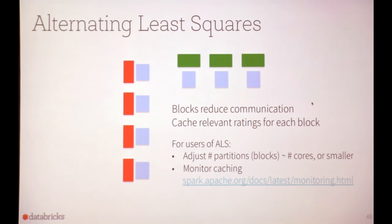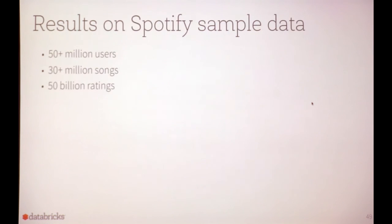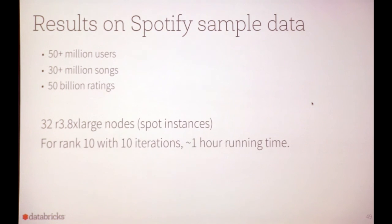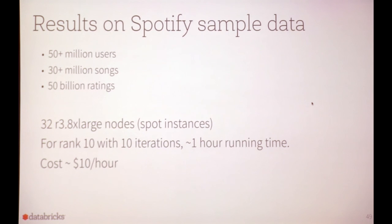It's also important to monitor caching via the Spark UI, where you can look at each of your executors to see how much data they're caching. After some tuning like this on the Spotify sample data with 50 billion ratings, run on 32 Amazon EC2 r3.8xlarge nodes using spot instances, rank-10 factorization with 10 iterations got a reasonable answer in about an hour. The total cost was about $10 per hour — pretty impressive for processing that large a chunk of data at very low cost.